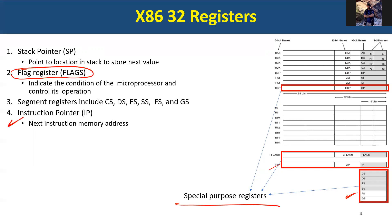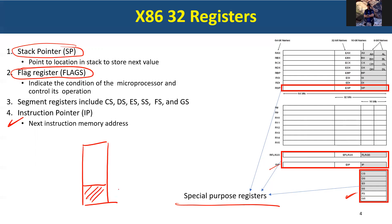The instruction pointer was introduced before — it's basically a register that holds a pointer to the next instruction the processor should execute. The stack pointer is also very important. The stack is a part of memory — part of it is called the stack, and we deal with it in a different way than regular memory, as we'll see in the future.